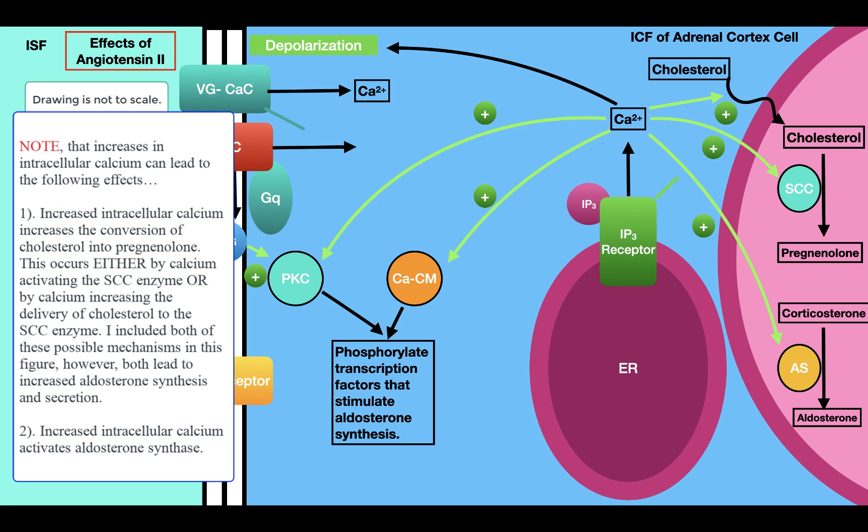So the overall effect of angiotensin 2 on the adrenal cortex is that it increases aldosterone synthesis and secretion.